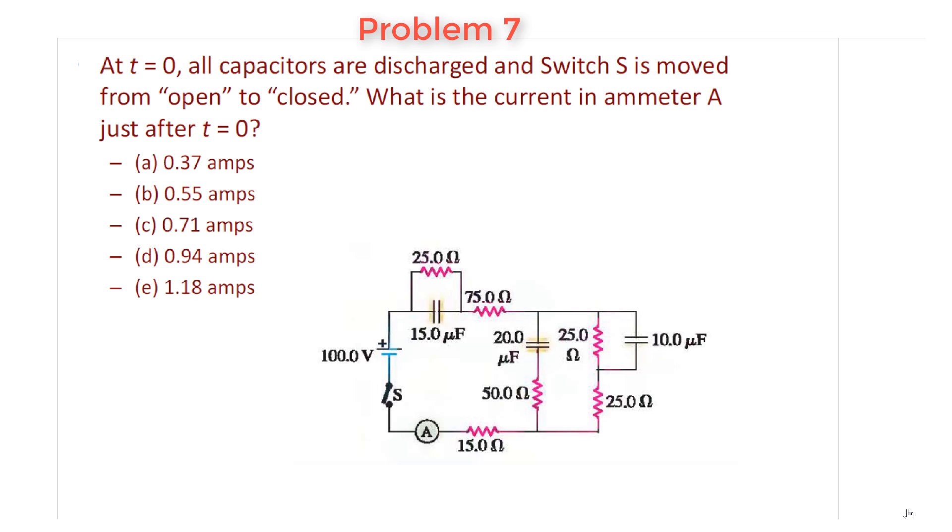Okay, this is problem seven. At time equals zero, all these capacitors, so the 15, 20, and the 10, are discharged. So there's no voltage across them, and the switch is moved from open to close. You want to know what's the current down here in the ammeter just after T equals zero.